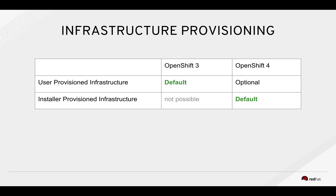I want to introduce two new terms: user provisioned infrastructure and installer provisioned infrastructure. In OpenShift 3, the only way to bring infrastructure was if you provisioned it yourself. For OpenShift 4, we're introducing installer provisioned infrastructure — the Amazon installer, for example, will configure your EC2 nodes, all the security groups, hook up the load balancers, and do everything you need for a functional cluster. Optionally, you'll still be able to provide user provisioned infrastructure, which is very useful for bare metal environments where you don't have rich APIs and may need to rack machines manually.